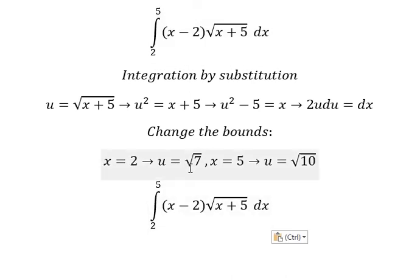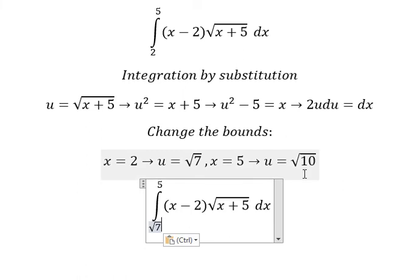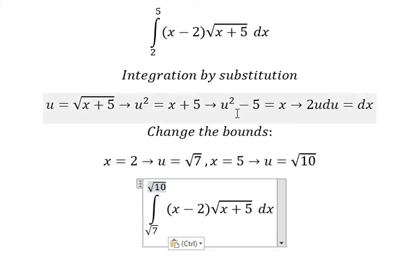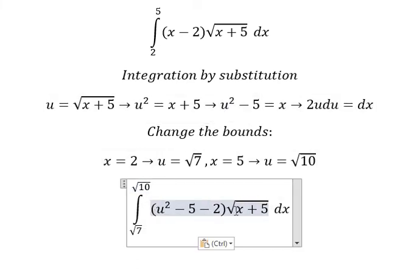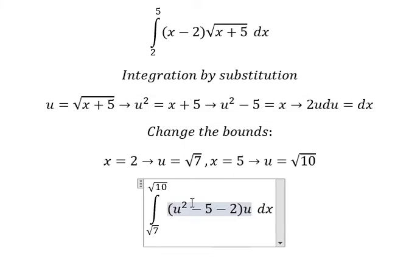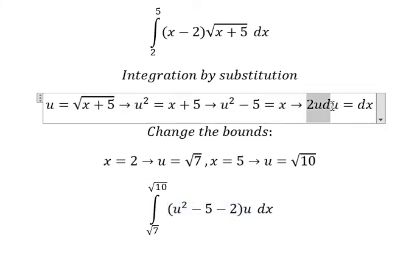So we change the lower bound 2 to √7 and the upper bound 5 to √10. We replace x with u² - 5, the square root of x + 5 with u, and dx with 2u du.